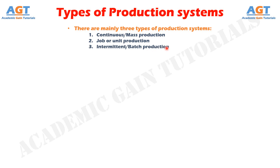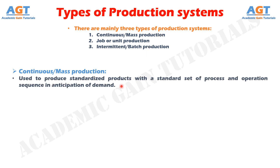Continuous or mass production is used when we need to produce standardized products with a standard set of process and operation sequence in anticipation of demand. This ensures continuous production of output. It is also termed as mass flow production or assembly line production. This system results in less work in process inventory and high product quality but involves high capital investment in machinery and equipment.